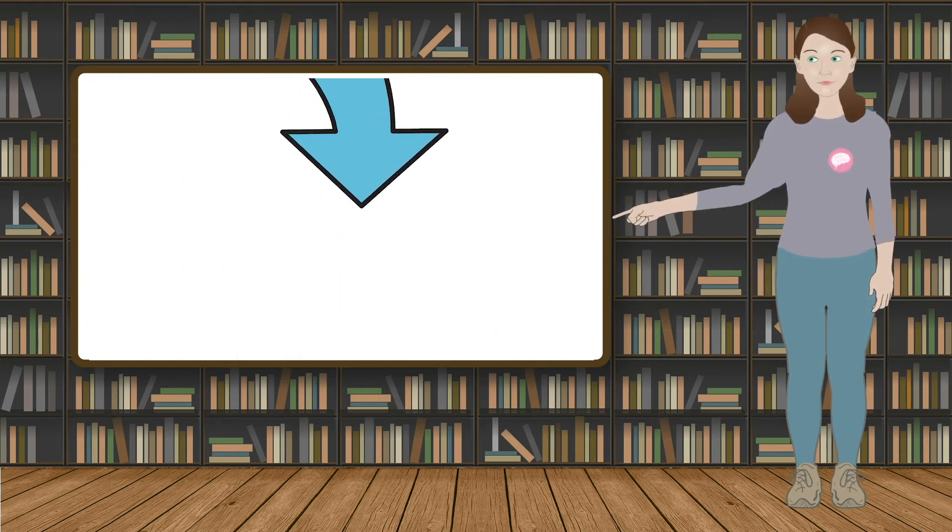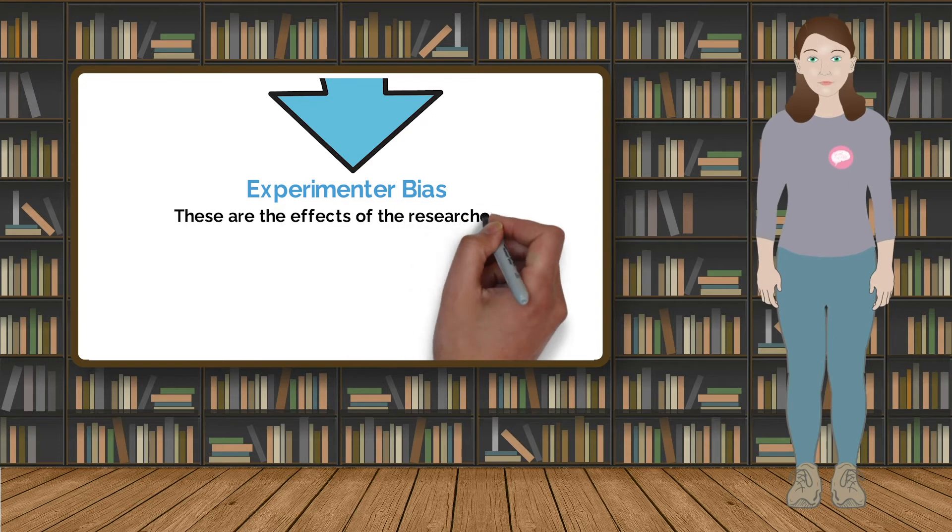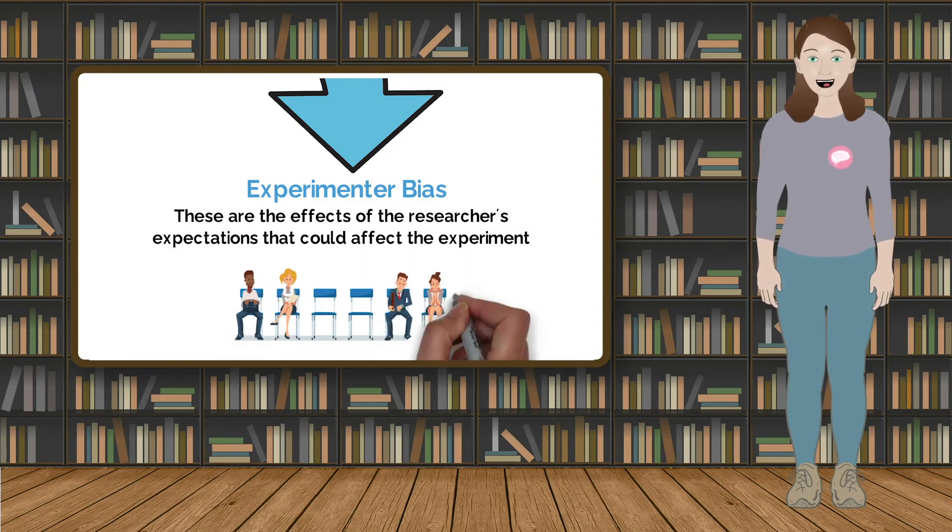The final type of extraneous variables is experimenter bias. These relate to effects of an experimenter's expectations which are somehow communicated, intentionally or unintentionally, to the participant.